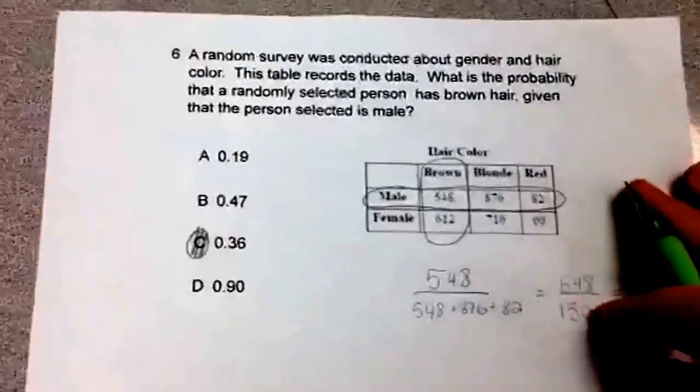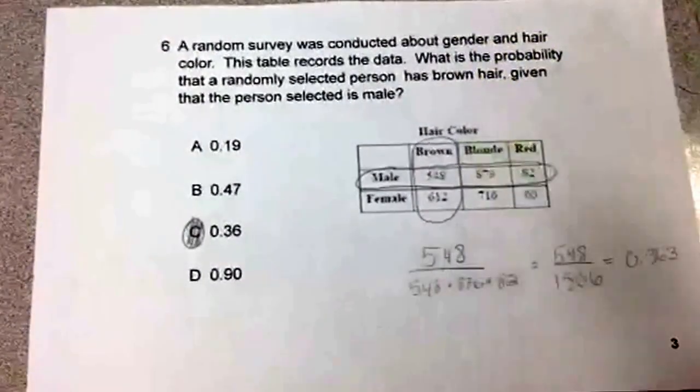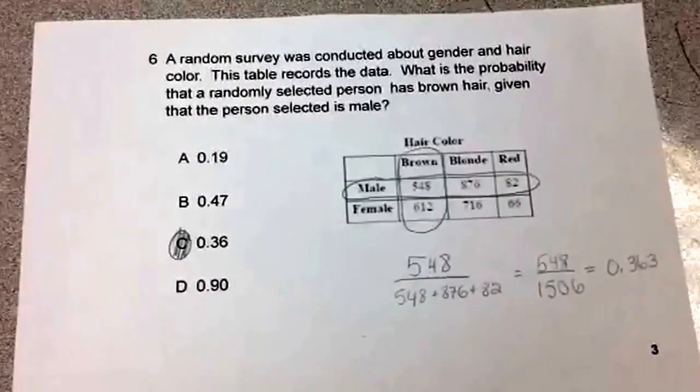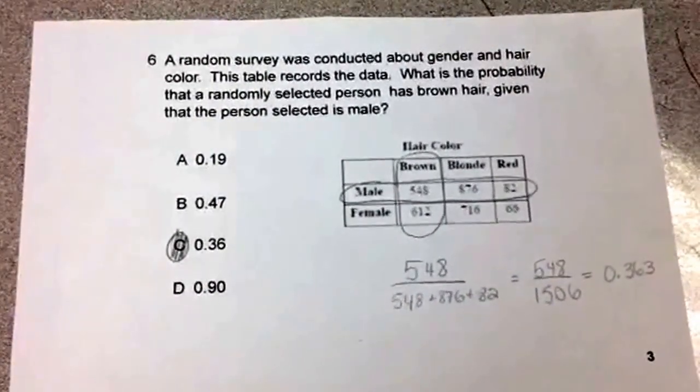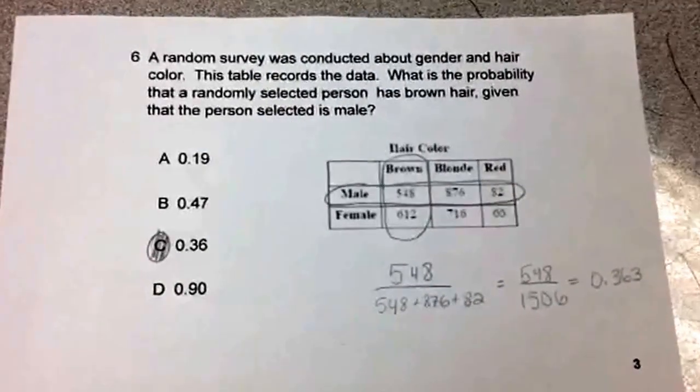This was the question we were given. As you can see, a random survey was conducted about gender and hair color. This table records the data. What is the probability that a randomly selected person has brown hair, given that the person selected is male?